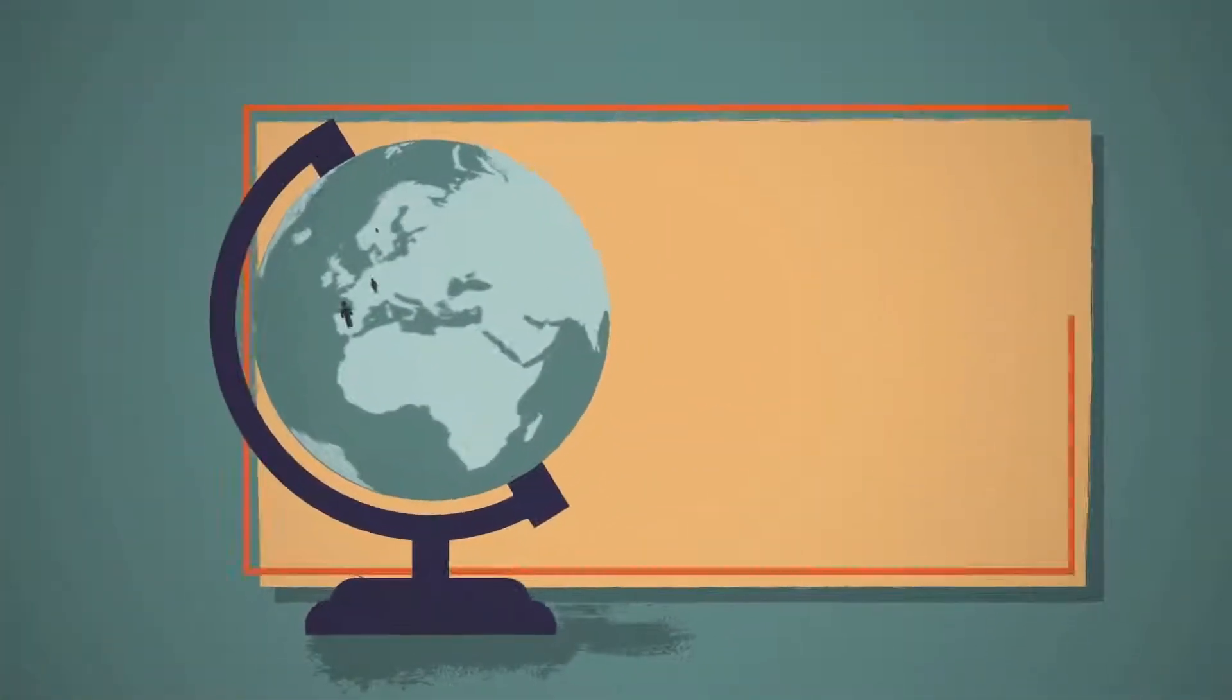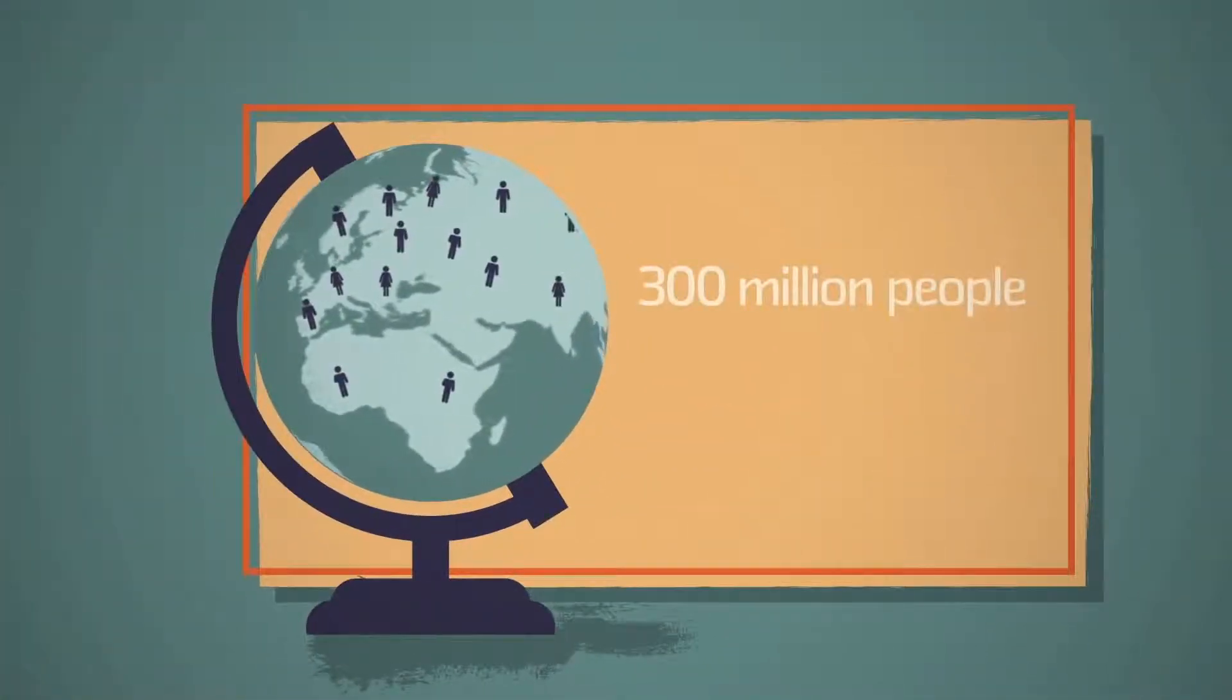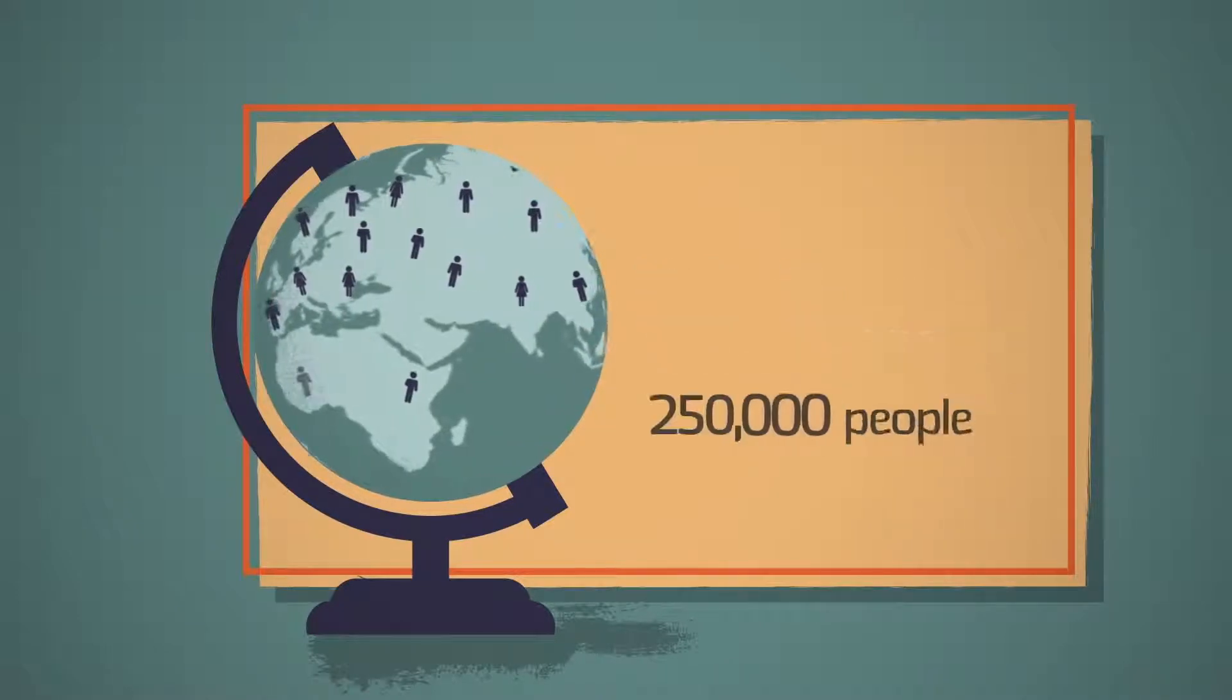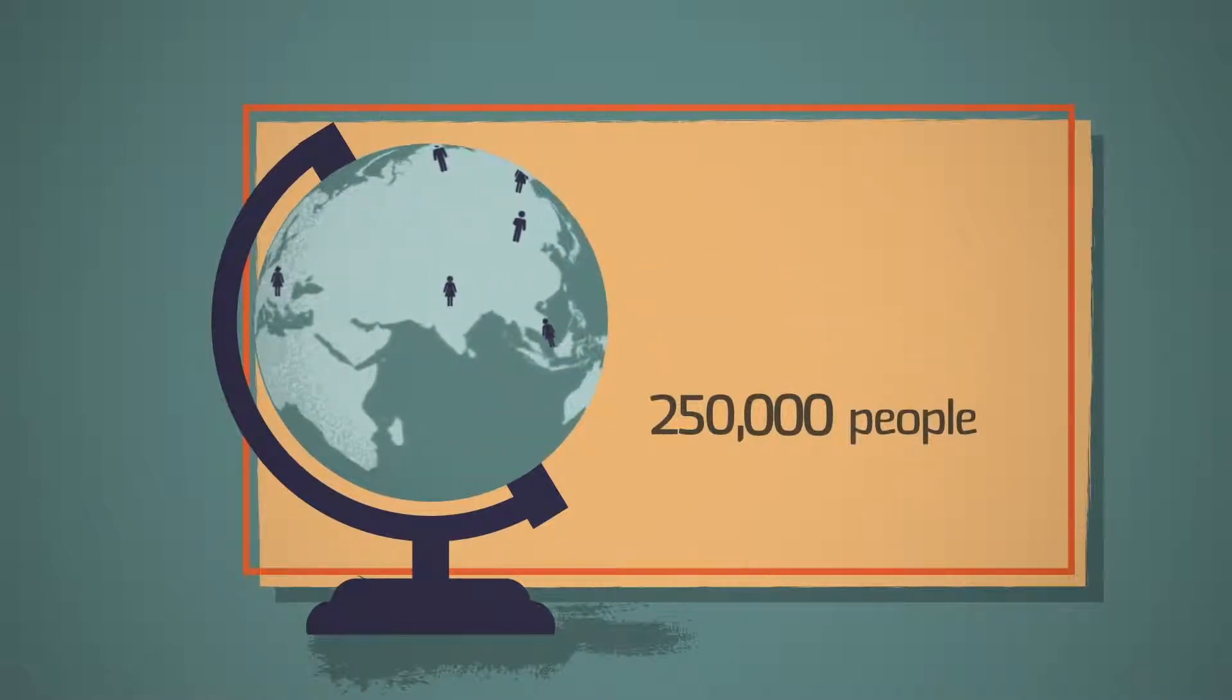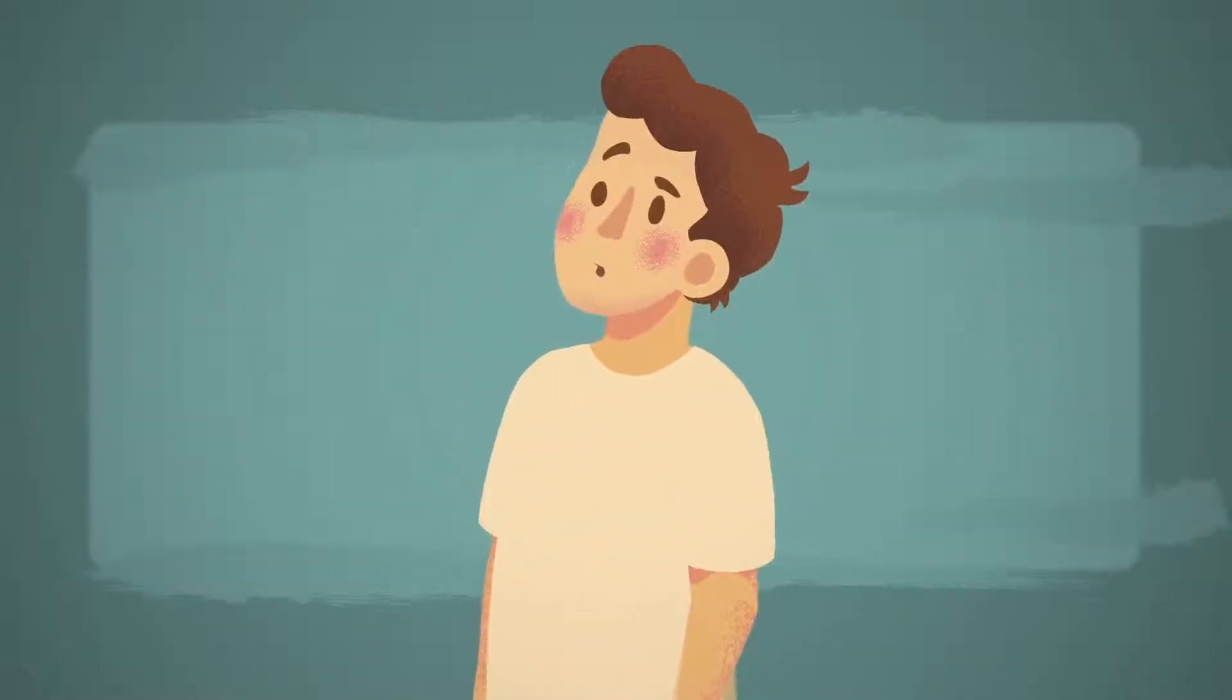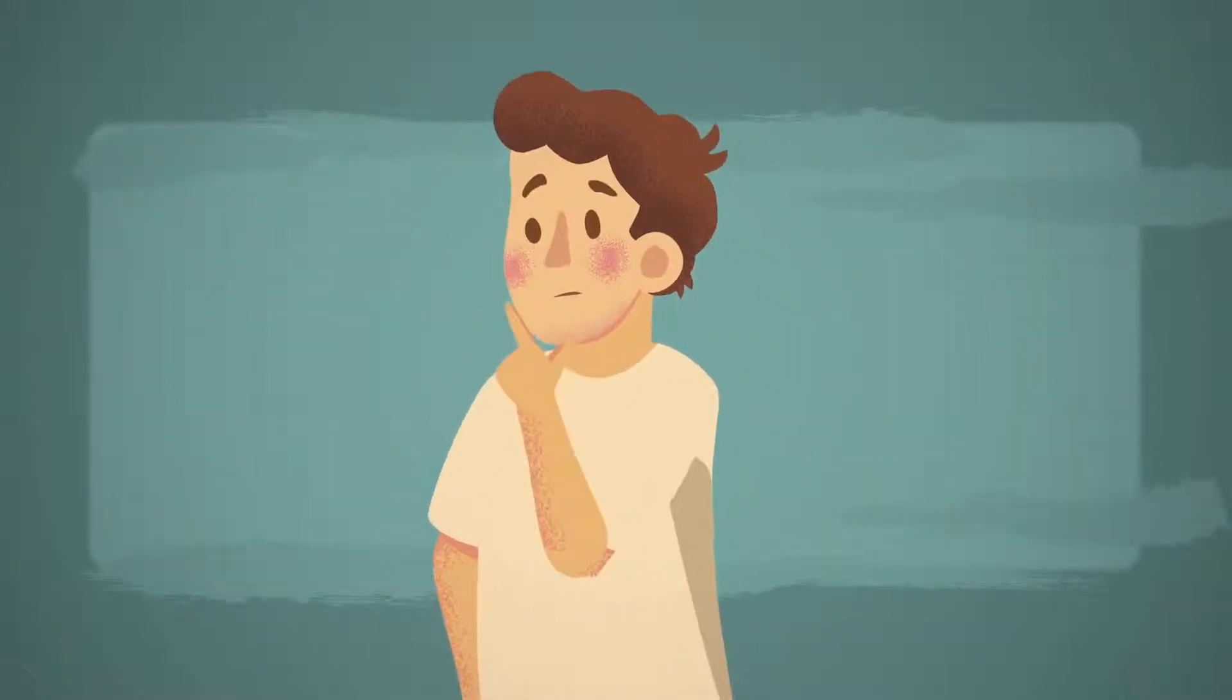Around the world, more than 300 million people suffer from asthma, and around 250,000 people die from it each year. But why do people get asthma, and how can this disease be deadly?